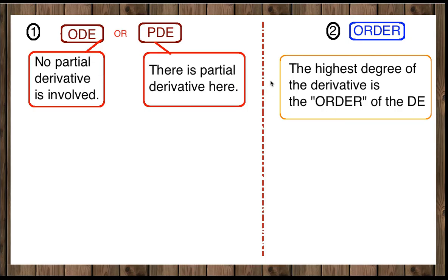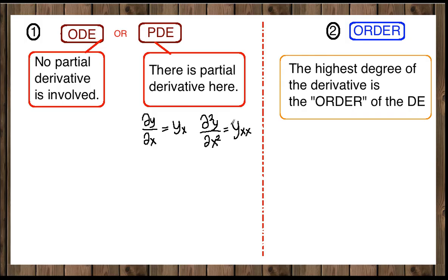How can we recognize the partial differential equation? The notation for partial differential equations is the curvy d, which is del y over del x. You can also write it in sub-notation as y_x. If it is second degree, then del squared y over del x squared, and in sub-notation it is y_xx. In contrast, dy/dx is the first ordinary derivative, written as y-prime or dy/dx. The partial derivative uses the curvy d — del y del x or sub-notation y_x — and this is our main indicator to distinguish ordinary from partial differential equations.